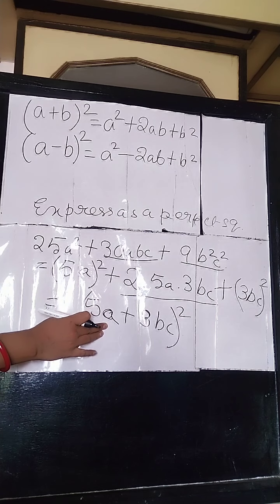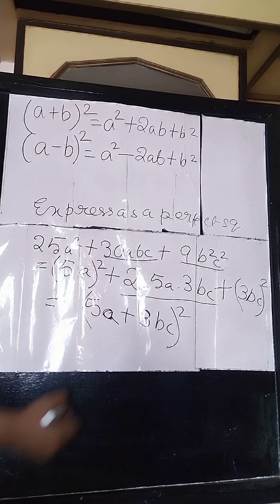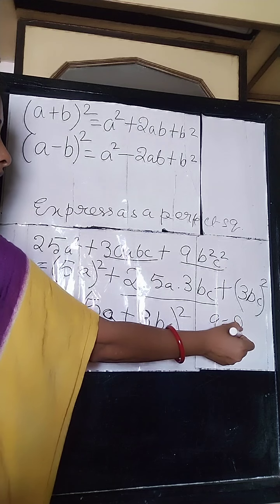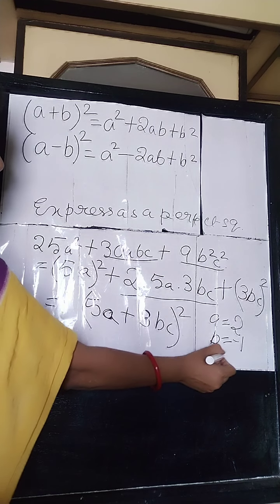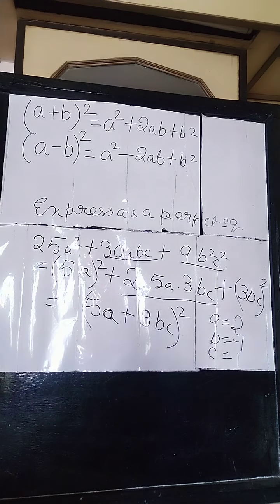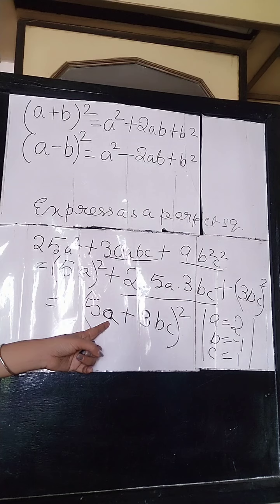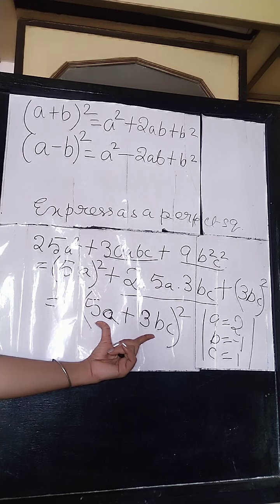Now the sum does not end here. Suppose you are given the numerical values of the algebraic variables. In the sum it is given that the value of a is 2, the value of b is minus 1, and the value of c is 1. You are asked to place these numerical values in the algebraic expression and find the full numerical value of 5a plus 3bc whole square.